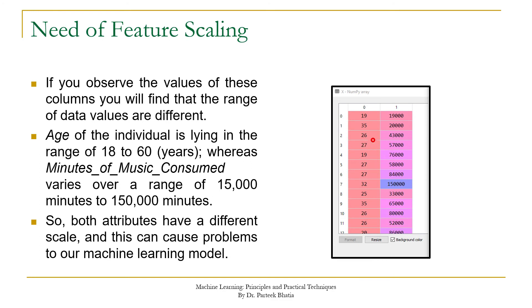Same way in this case we have age and minutes of music consumed. One column has the values in thousands and lakhs, while another column just has values less than hundred. So of course the second column which has the values in the range of lakhs will get more important as compared to the column which has the values just below hundred.